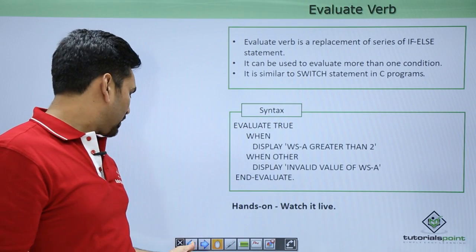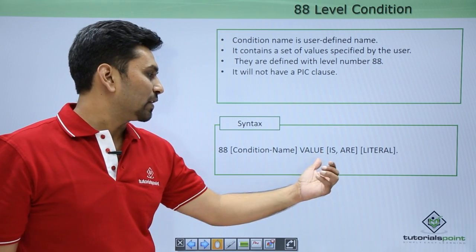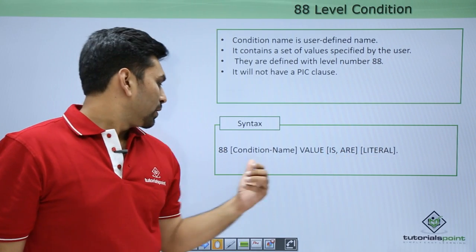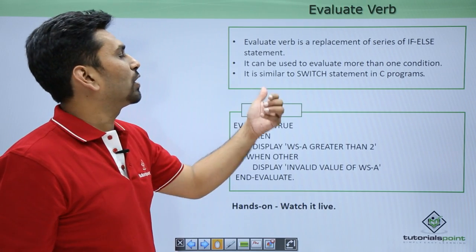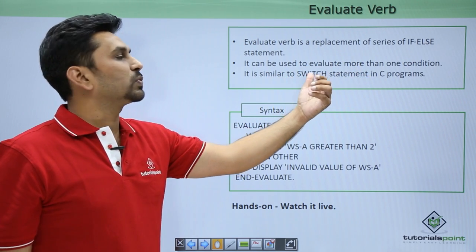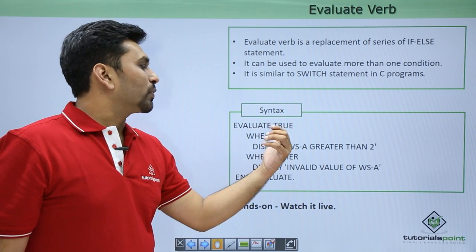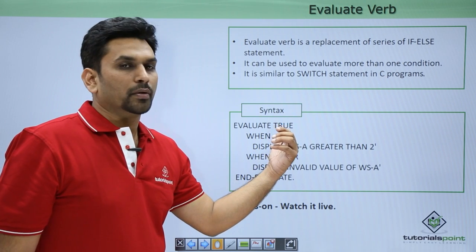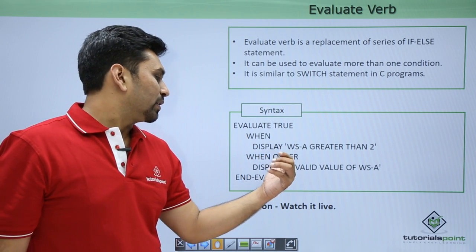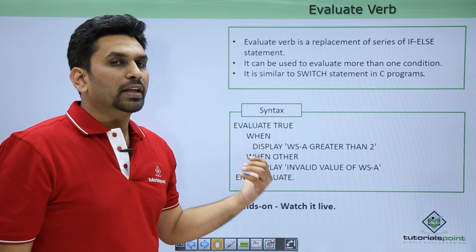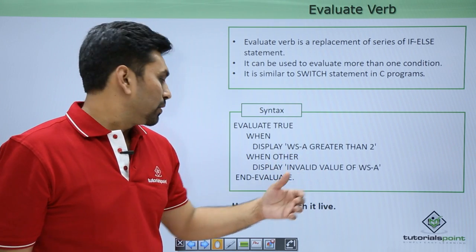The evaluate verb, which uses 88-level definitions, is a replacement for if-else and is comparable to the switch statement in C. At 88-level, PASS is 40 to 100 and FAIL is 0 to 40. We write 'EVALUATE TRUE', then 'WHEN PASS DISPLAY ...' and 'WHEN FAIL DISPLAY ...'. At the end, 'WHEN OTHER' handles any condition not matched above.